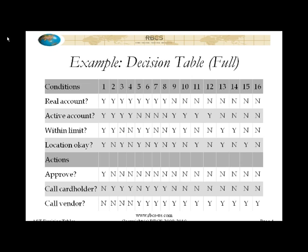One other thing to mention: in this case the conditions are Boolean, and therefore each has two values, so the number of columns is two to the n power, where n equals the number of conditions. Not all conditions are Boolean. Conditions can be defined on ranges of values, or on variables that could take on three, four, or more values. In that case, that would change the number of columns and change the pattern — but it would be an extension of the same kind of thing.